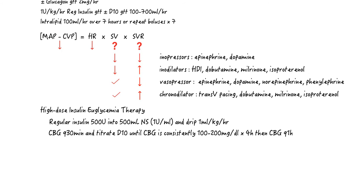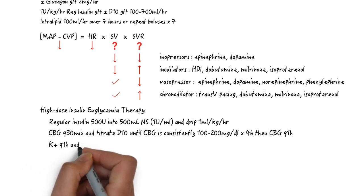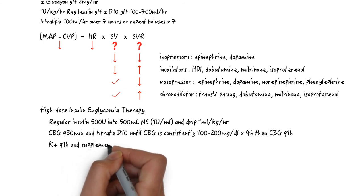There have been case reports of giving up to 1,000 units of regular insulin without needing to give dextrose in the patients with severe calcium channel blocker overdose because of the degree of insulin resistance. Continue to check the CBGs every 30 minutes until the CBG is consistently 100 to 200 for 4 hours before switching this to Q1 hour. Check the potassium every hour as well because of the potential to induce severe hypokalemia. This needs to be supplemented aggressively.